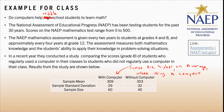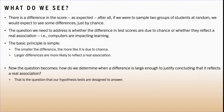There is a difference in scores, but as expected, if we were to sample two groups of students at random we would expect to see some difference just by chance. The question we need to address is whether the difference in test scores is due to chance — random sampling — or whether it reflects a real association, namely that computers are impacting learning. The smaller the difference, the more likely it's due to chance; the larger the difference, the more likely it reflects a real association. Our hypothesis tests are designed to answer exactly that question.